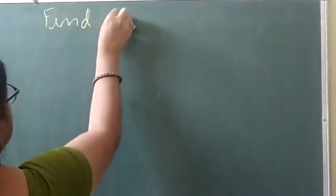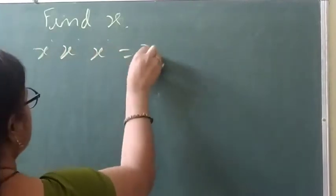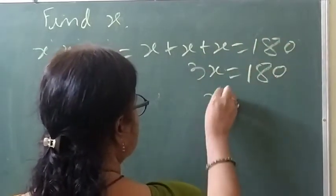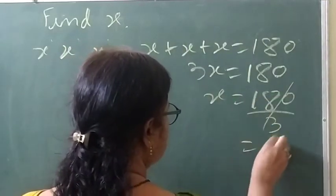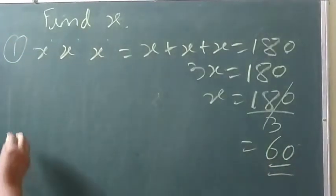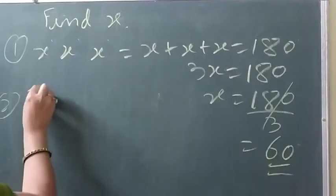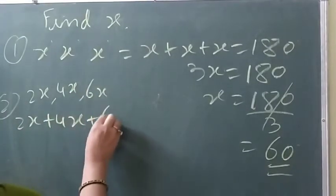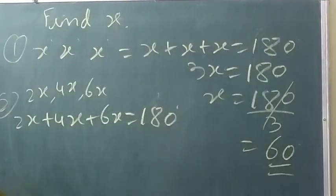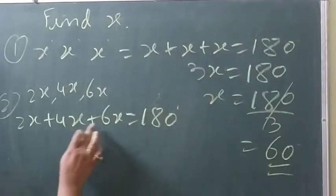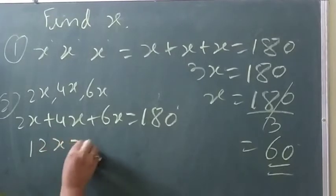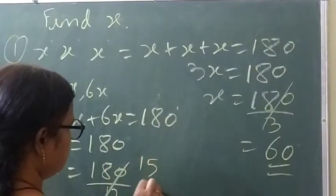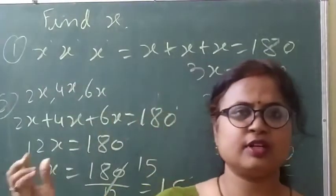Find x. Here all three angles are x degrees, x degrees, x degrees. So x plus x plus x equals 180 degrees, meaning 3x equals 180, so x equals 180 divided by 3, which is 60 degrees. Similarly, for a triangle with angles 2x, 4x, and 6x: 2x plus 4x plus 6x equals 180, so 12x equals 180, and x equals 180 divided by 12, which is 15 degrees.